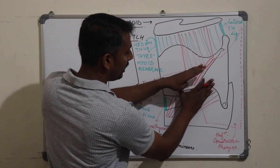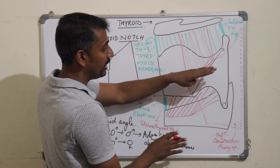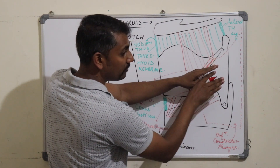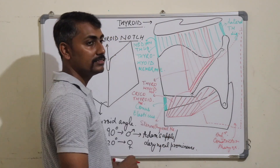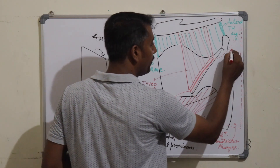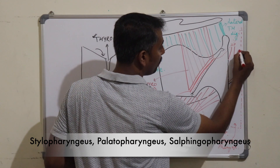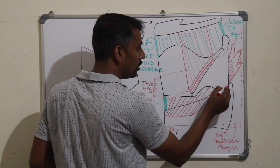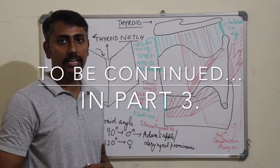Between the inferior constrictor and the sternothyroid muscle, in this gap, lies the upper pole of the lateral lobe of the thyroid gland. Therefore, the upper pole of the lateral lobe of the thyroid gland extends to the oblique line. The posterior border of the thyroid cartilage gives attachment to a conjoint tendon formed by a combination of three muscles: the stylopharyngeus, palatopharyngeus, and salpingopharyngeus muscles. This completes the thyroid cartilage. Next, we will see the cricoid cartilage.